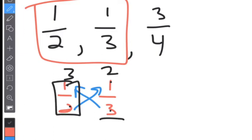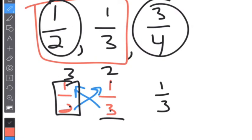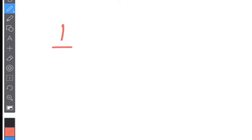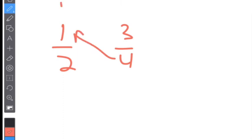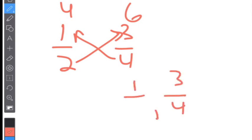Now I'm going to take one half and three fourths and go ahead and cross multiply to compare them. We have one half and three fourths. Cross multiplying, I get four and I get six. So I know that three fourths is bigger than one half. And I already know that one third is less than one half. So the order is one third, one half, and three fourths.